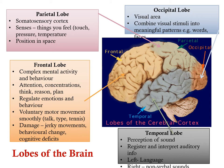The temporal lobe deals with the perception of sound — it registers and interprets auditory information. The left side of the temporal lobe deals with language, and the right side deals with non-verbal sounds.